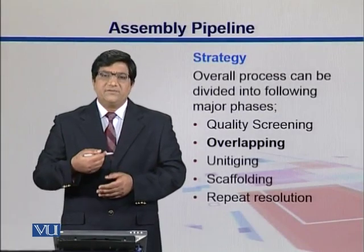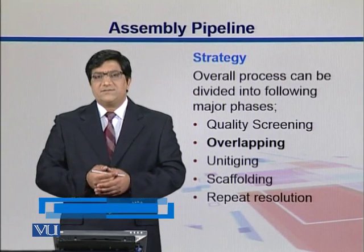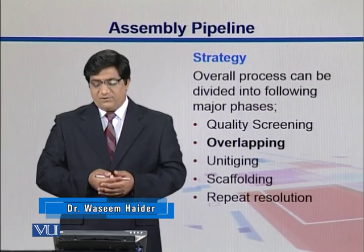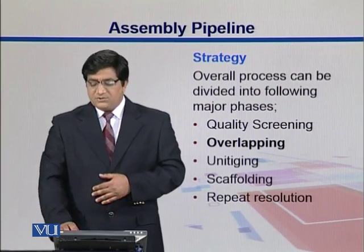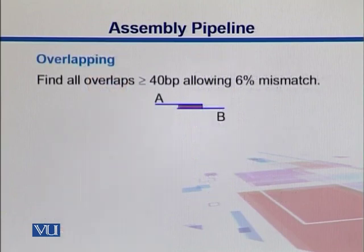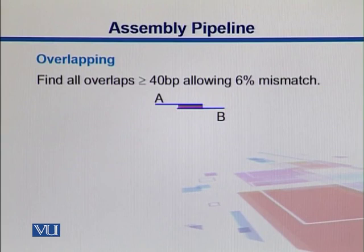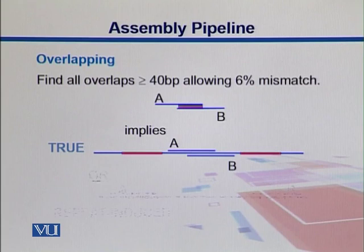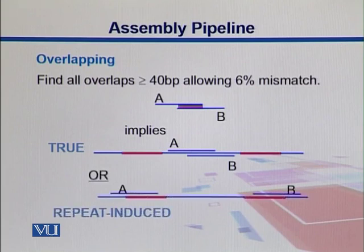In this section we will look into different remaining milestones of this assembly pipeline, like overlapping, unitigging, and scaffolding, and repeat resolution. For overlapping, we take our sequences and find overlaps, allowing some mismatches — maybe up to five to six percent. Once we have these overlaps, we can estimate the true situation of two genes in a chromosome, giving us either a repeat-induced assembly or a no-repeat overlap situation.